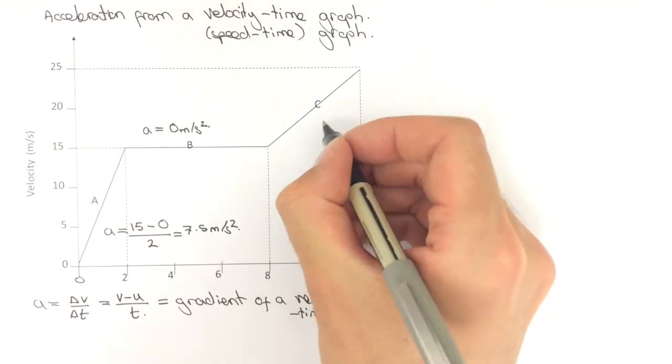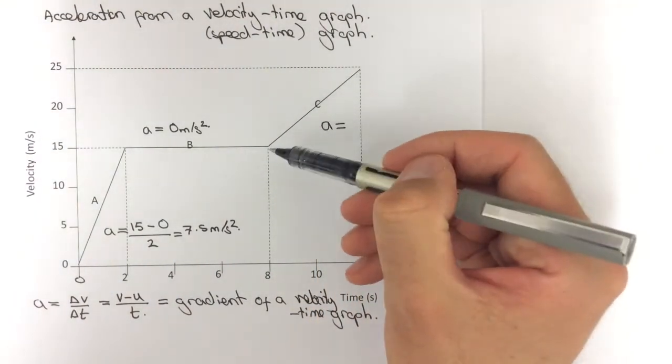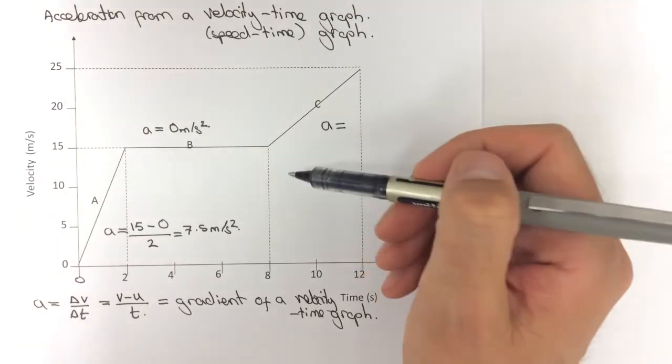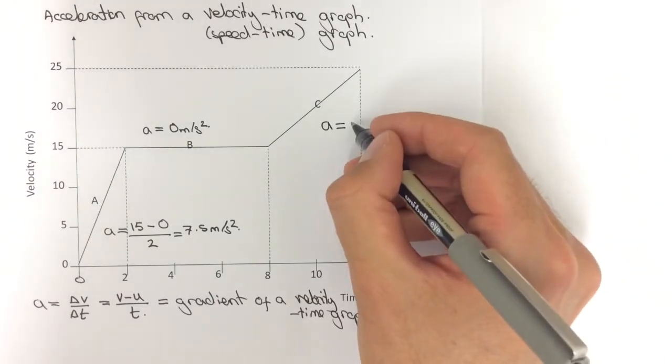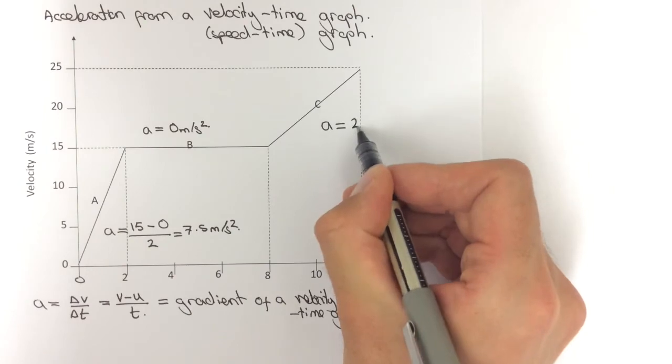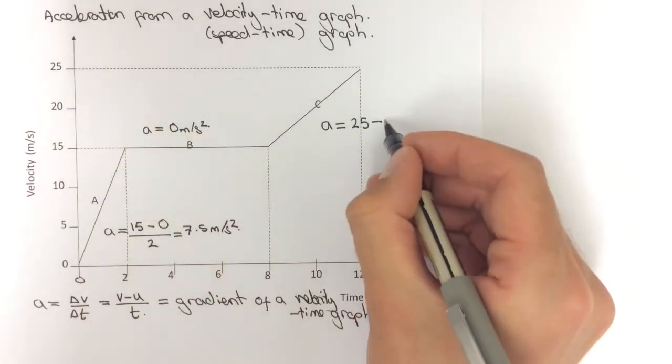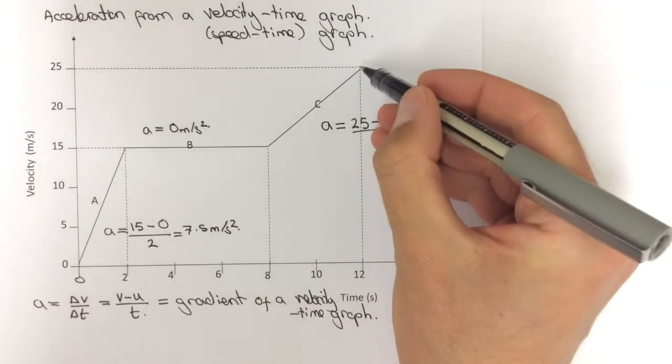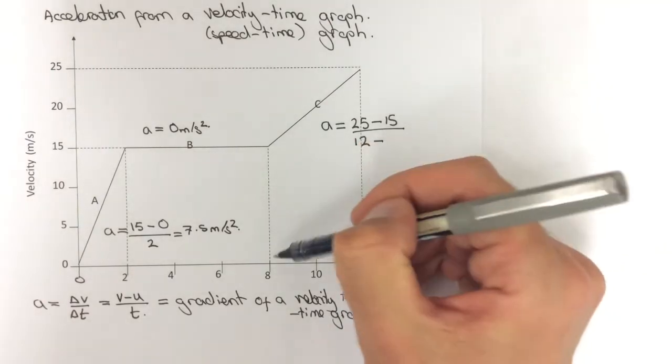So for section C, it's slightly more complicated than section A because the starting values of time and velocity are not 0. So when we work out the change in velocity, we need to do the final value, 25 minus the starting value, 15, divided by the time taken. So we need to do the final time, which was 12 minus the starting time...